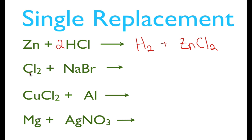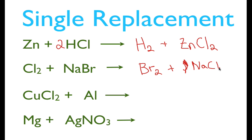The next example is anion single replacement. Chlorine, a non-metal, is going to kick out bromine from our compound. That gives us Br₂, a diatomic molecule, plus sodium chloride NaCl — since sodium is +1 and chlorine is -1. We have two bromines on the product side, so we put a coefficient of 2 in front of NaBr and 2 in front of NaCl to balance it. That is the balanced single replacement reaction for chlorine and sodium bromide.